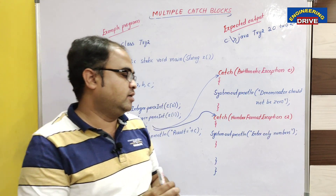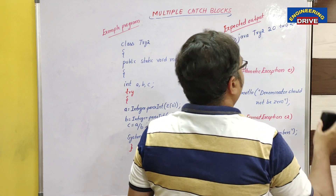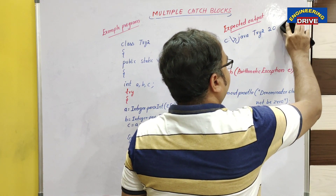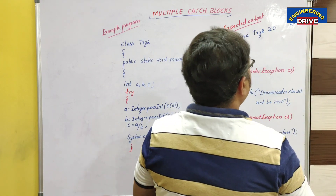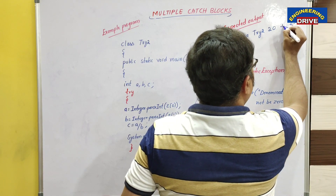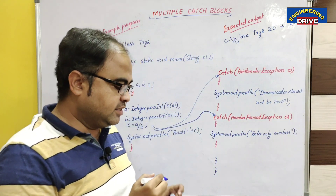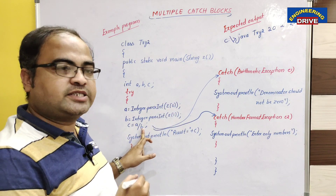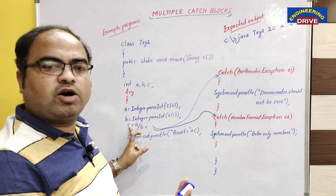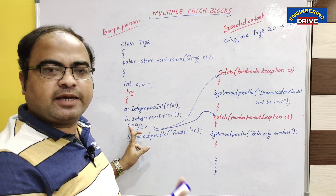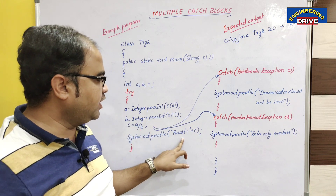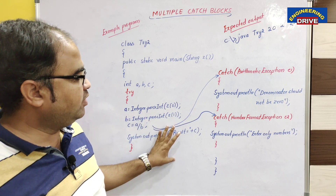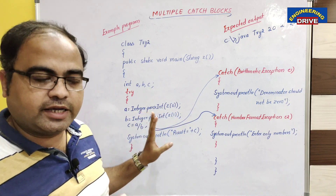The third case: if I give a normal number, say b=2, then 20 divided by 2 equals 10, and c is 10. No runtime error occurs, so we directly get the output: 'Result is equal to 10.'